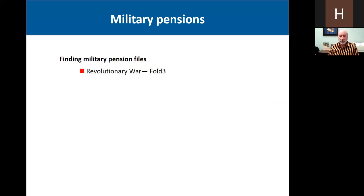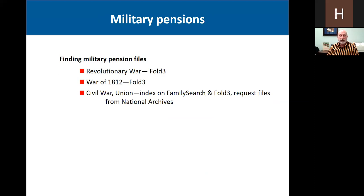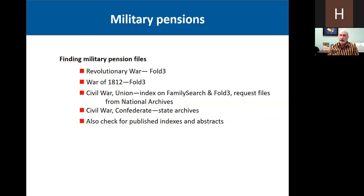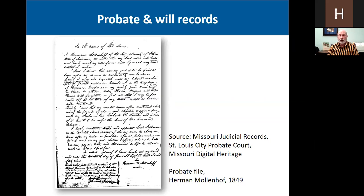For finding military pensions: for Revolutionary War and War of 1812 pensions, those are being put up on Fold3. For Civil War Union, there is an index on FamilySearch and Fold3, but you're going to have to request the files through the National Archives. For Confederate pensions, those are held in state archives in Southern states. Also, pension files are sources that people have created indexes or abstracts out of, so check to see if there are indexes published for the area your ancestor lived in.